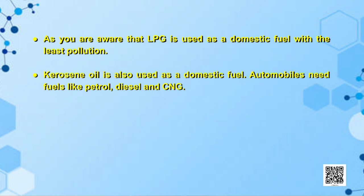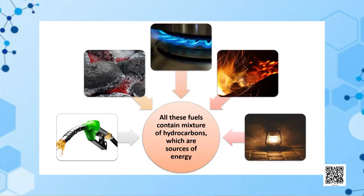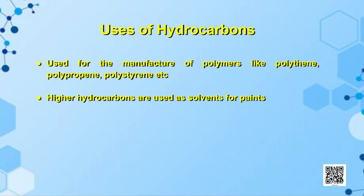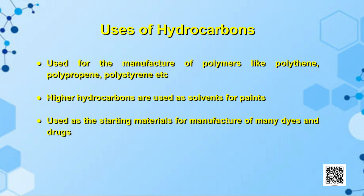Kerosene oil is also used as a domestic fuel. Automobiles need fuels like petrol, diesel and CNG to run. All these fuels contain a mixture of hydrocarbons which are sources of energy. Hydrocarbons are also used for the manufacture of polymers like polythene, polypropene, polystyrene, etc. Higher hydrocarbons are used as solvents for paints. They are also used as the starting material for the manufacture of many dyes and drugs.